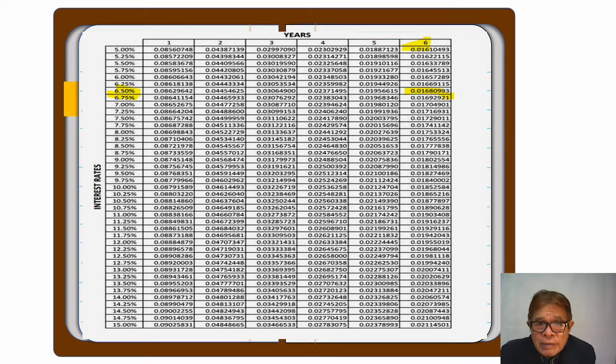Am I correct? 6.5%. That is the factor that you are going to use in multiplying to the loan amount. Whatever the result is the monthly amortization.